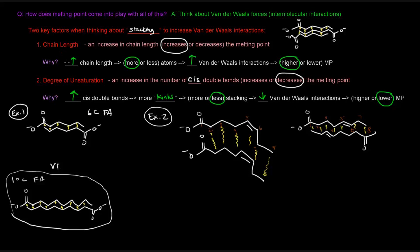So those are the two factors: chain length and degree of unsaturation. The cis double bond reduces the ability of fatty acids to stack, lowering Van der Waals interactions and lowering the melting point. This matters in practice: fats containing saturated fatty acid chains tend to be solid — things like animal fat and lard — whereas liquid fats like oils tend to have cis double bonds. I hope that video was helpful. Thank you for watching, don't forget to like, comment, and subscribe for more content, and please share it with anyone who might find it helpful. Happy studying.